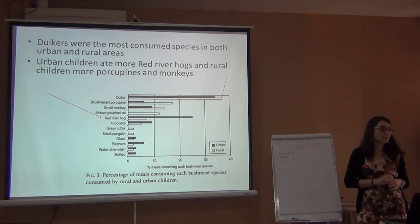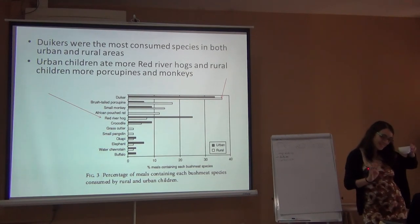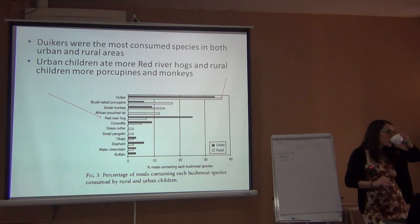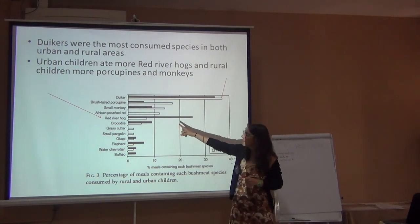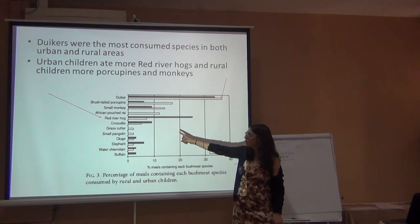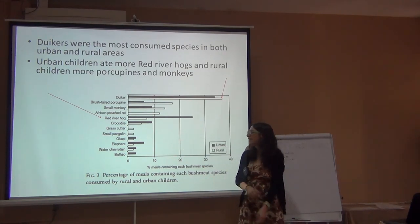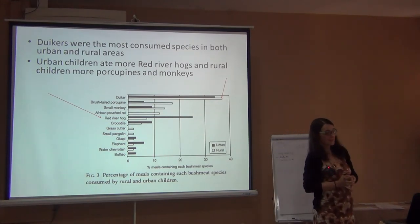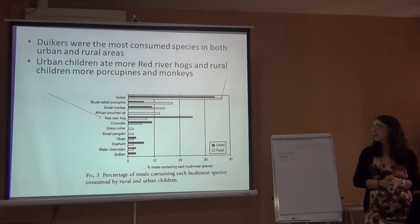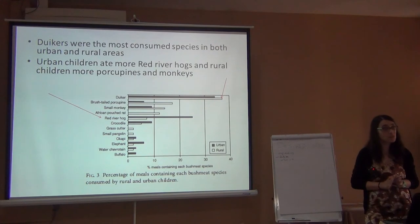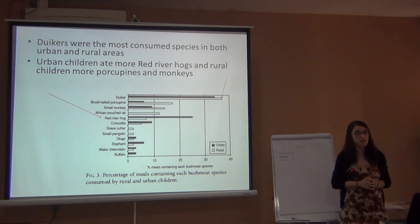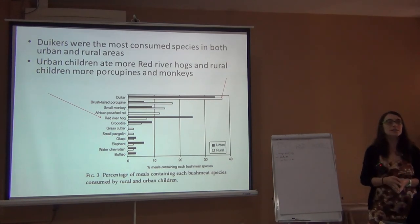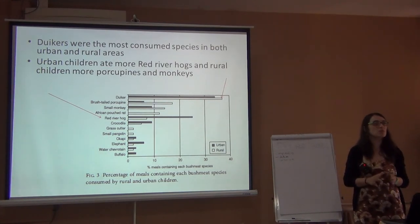Looking at the data panel, we can spot at least three endangered species. The species listed include duiker, porcupine, small monkeys, pouched African rat, red river hog, crocodile, grass cutter, small pangolin, okapi, elephant, water chevrotain, and buffalo. Elephant for food — not just ivory. Small pangolin — all pangolins are endangered. Even in city areas where it's illegal to trade them, you can still see them in the market.